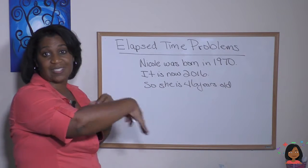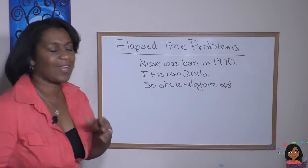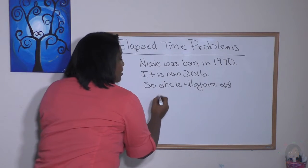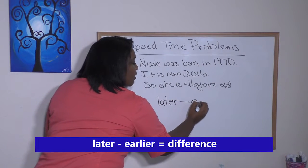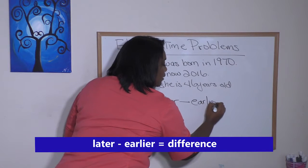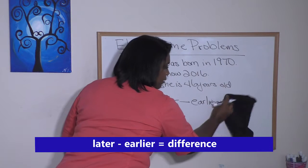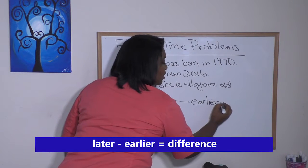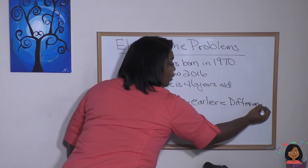How did I get there? We take the later year, we subtract the earlier year. Later minus earlier equals the difference in time, and that would tell you how old I was.